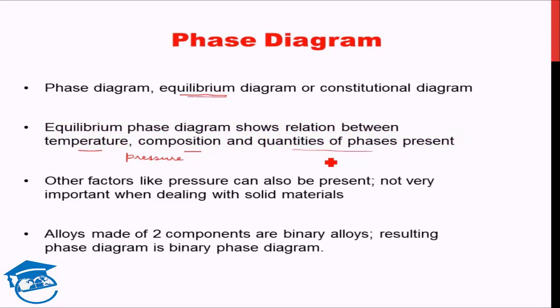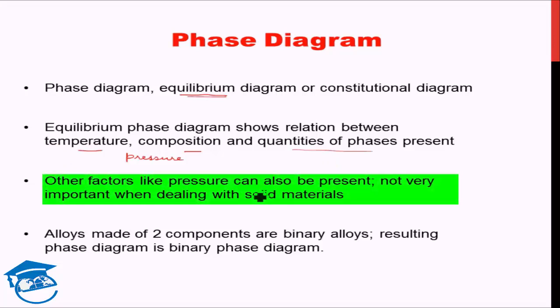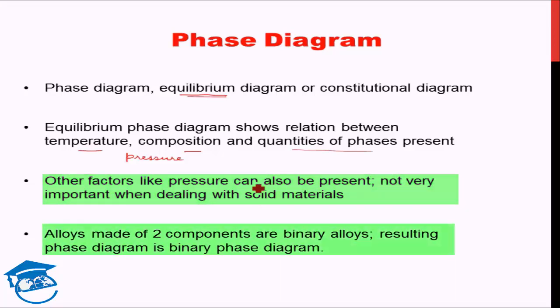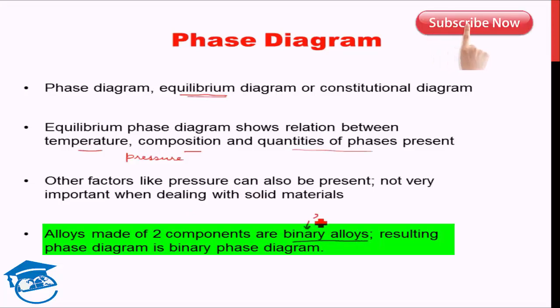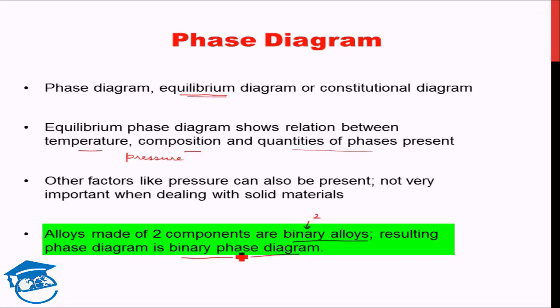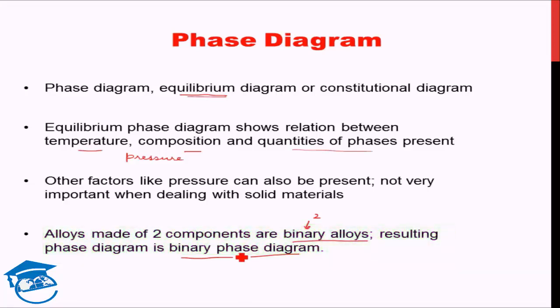Other factors like pressure can also be present but are not very important for solid materials. An alloy made of two components is known as a binary alloy, and the resulting phase diagram of a two-component system is known as a binary phase diagram. Our discussion about phase diagrams will be limited to binary phase diagrams. Three-component phase diagrams are known as ternary phase diagrams — we will not go into those details. Most applications in metallurgy and material science can be handled by understanding binary phase diagrams.